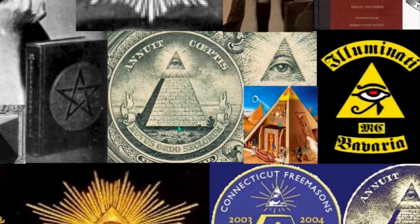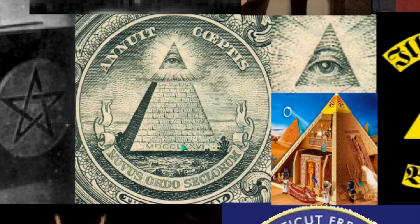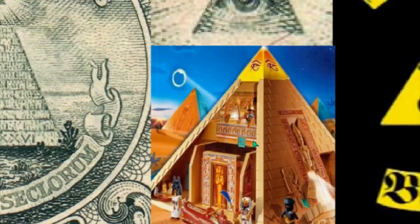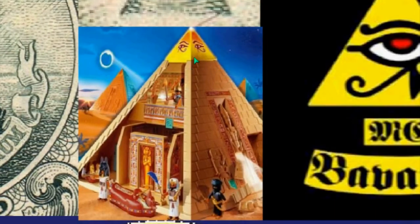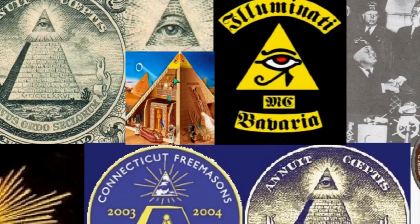Another thing to note is that in the Bible, Egypt is quintessentially a place of bondage. The story of Moses bringing the Hebrews out of Egypt is a great story in the Bible. God says, 'I brought you out of Egypt,' and therefore Egypt is a representation of bondage. We can see here this child's toy has the correct interpretation of the eye on top of the pyramid, with the Egyptian-style eye.